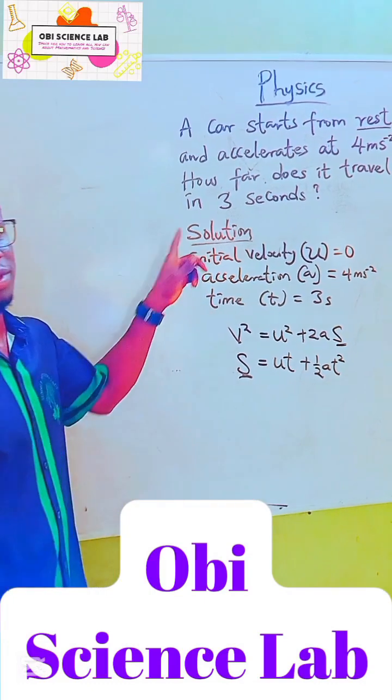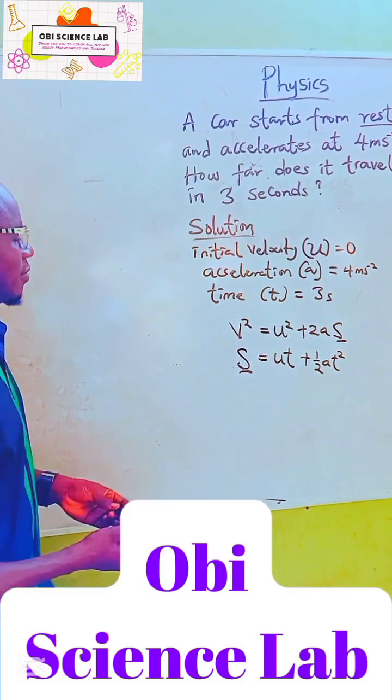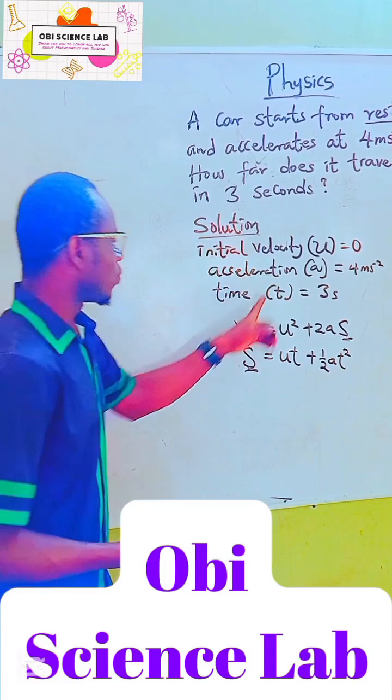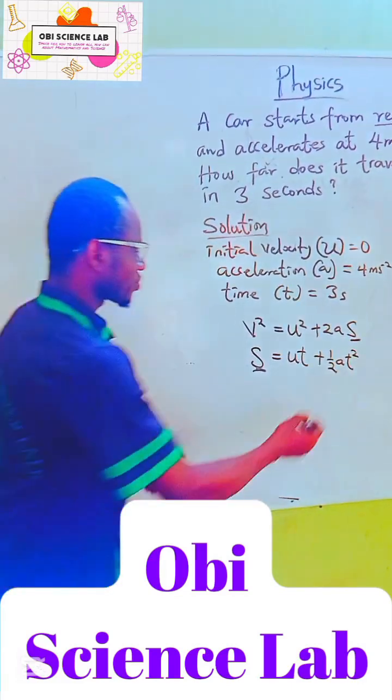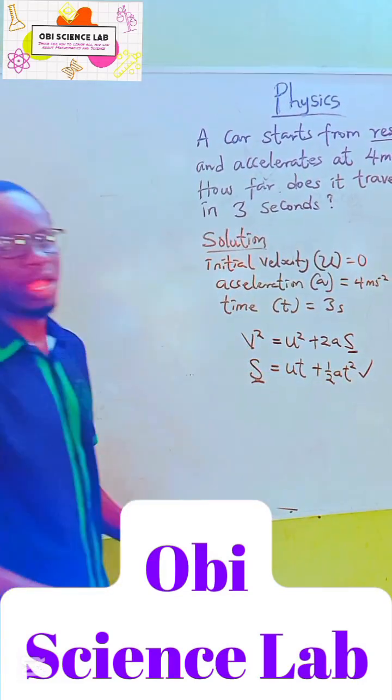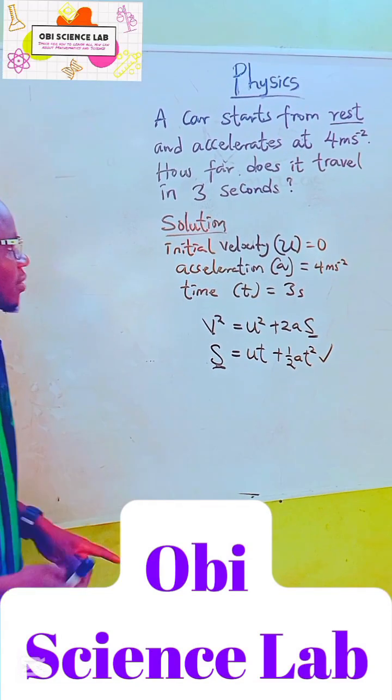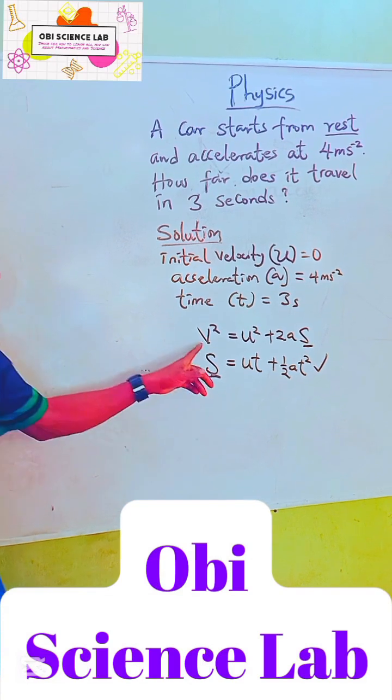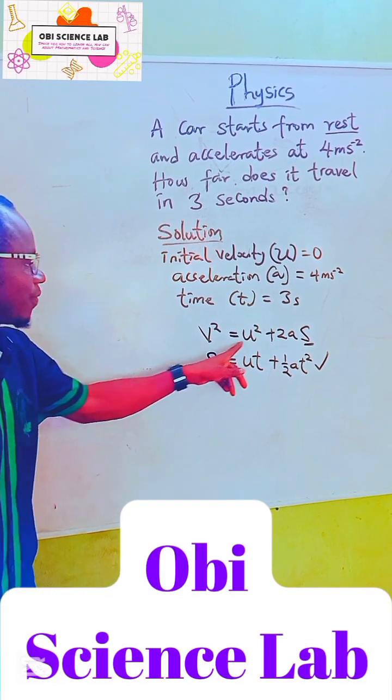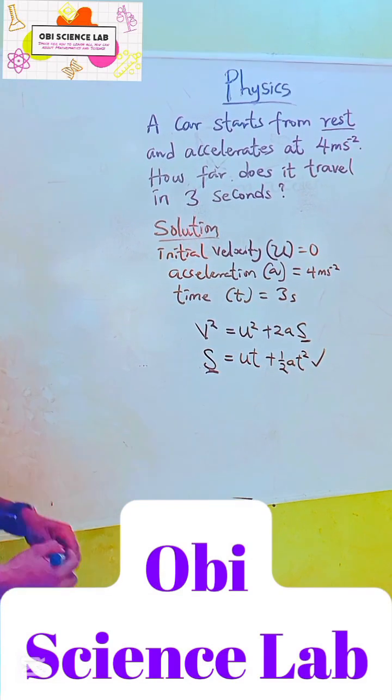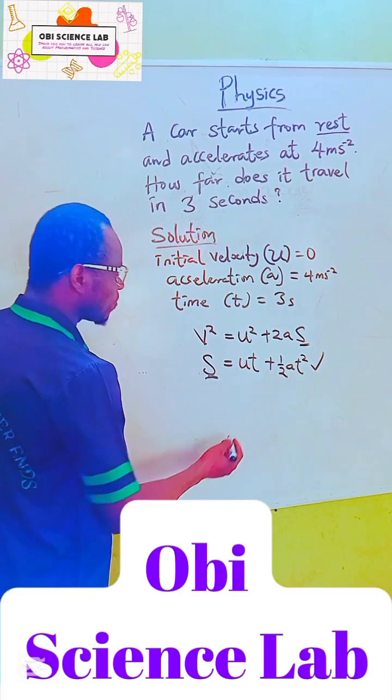This is also talking about distance because the question is asking us how far does it travel in three seconds. So with the data available from the problem, this equation will help us best in finding how far it travels in the three seconds, because in this first equation we don't have time, but the second one has time. So let's put in the data.